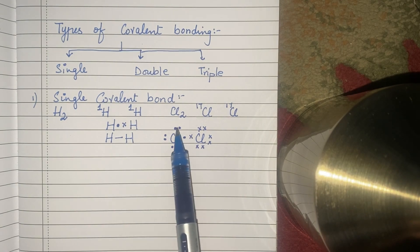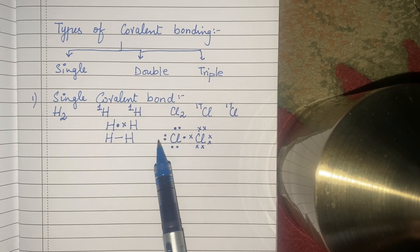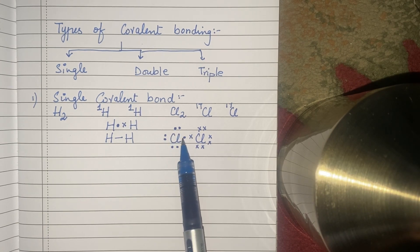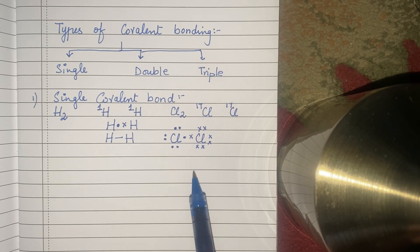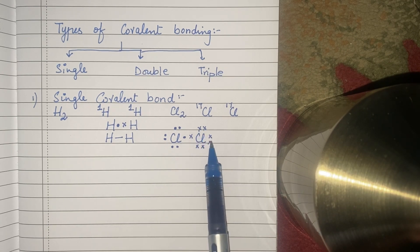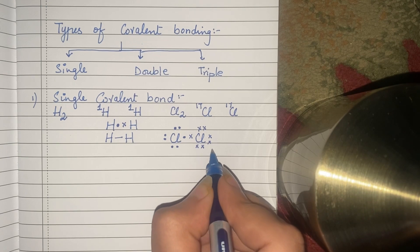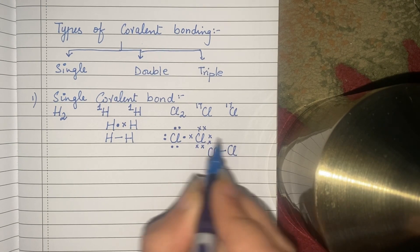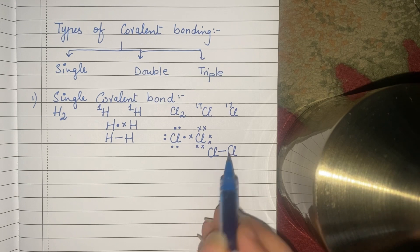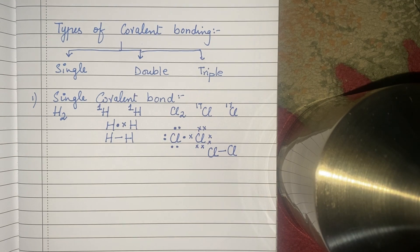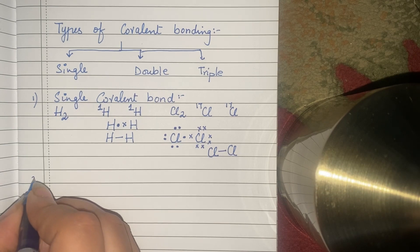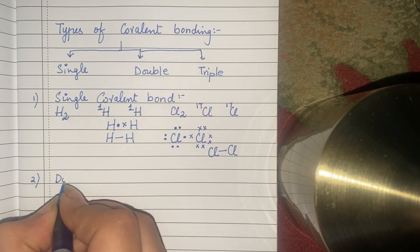अब अगर हम लोग count करें, तो हमारे पास दोनों के पास eight-eight electrons हो गए हैं. इन दोनों ने एक-एक electron share किया है, जिसकी वजह से दोनों stable हो गए हैं. तो इन दोनों के दर्मियान में हमारे पास जो bond बनेगा, that is single covalent bond — सिर्फ एक covalent bond है.